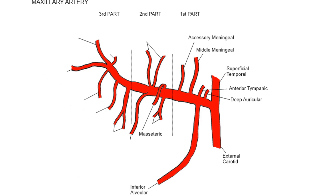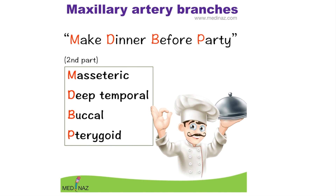The second part contains Masseteric Branch, Deep Temporal Branch, Buccal Branch, and Pterygoid Branch. The mnemonic for the second part is MDB P for Party — follow the red letters. M for Masseteric Branch, D for Deep Temporal Branch, B for Buccal Branch, and P for Pterygoid Branch.